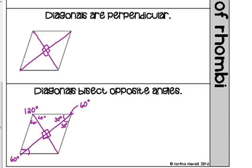Not all rhombuses have 60 and 120-degree angles — they can have different measures. This is just one example.